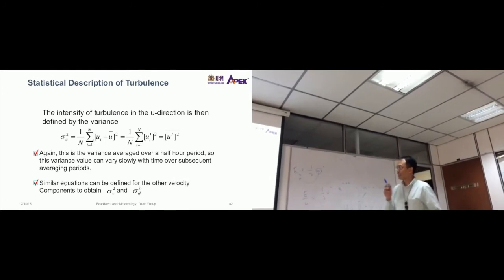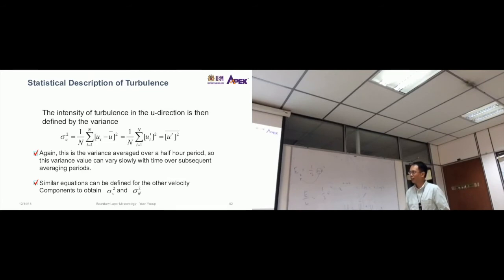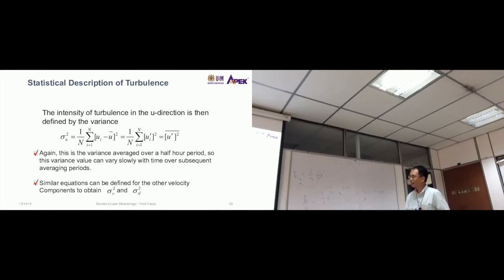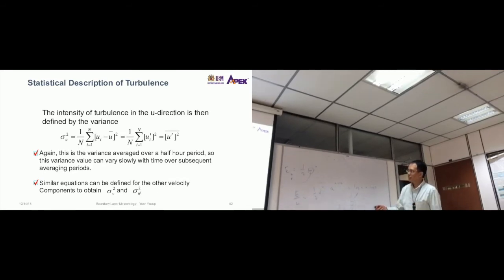So going back to the intensity of turbulence, how turbulence can be quantified. We use u as an example. So the intensity of turbulence in the u-direction is then defined by the variance. It's just this. So ui minus u bar squared divided by n. And that is the turbulence intensity.